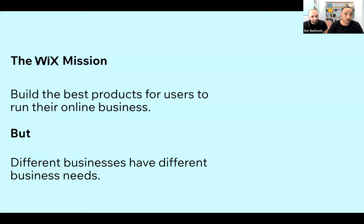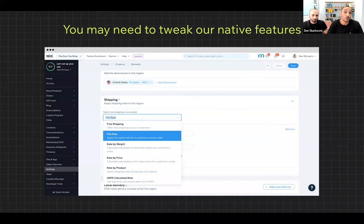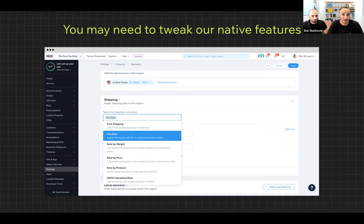But in reality, when we create a feature, not every business is going to use it because different businesses have different needs and different customization needs for pain points related to industries or specific calculation needs at checkout. This is why sometimes we need a way to tweak our native features, or at least have our own logic for calculation alongside those amazing native features.